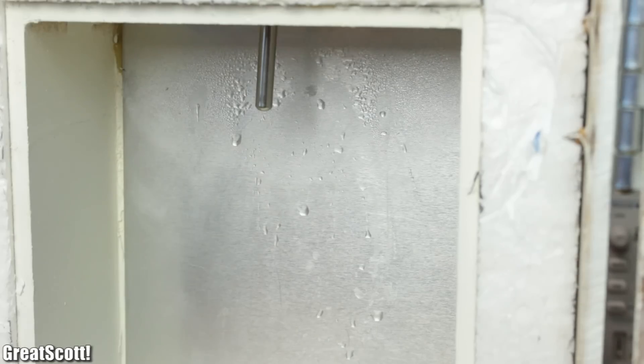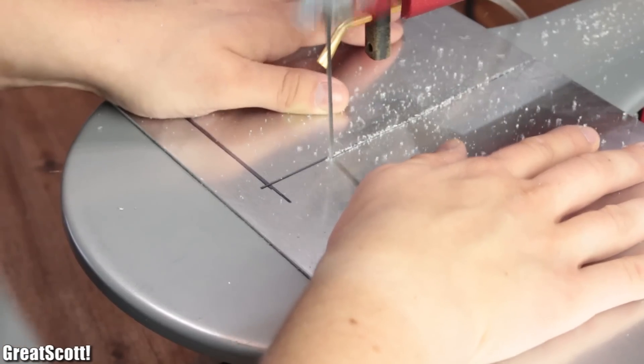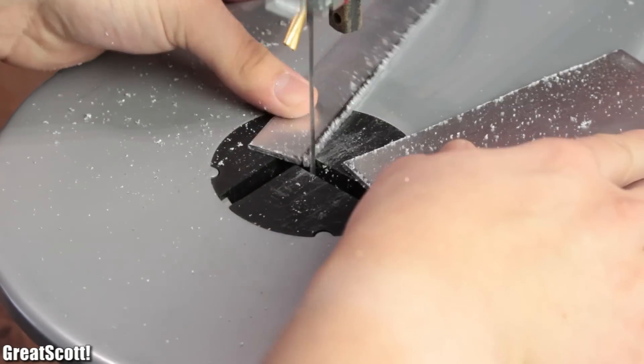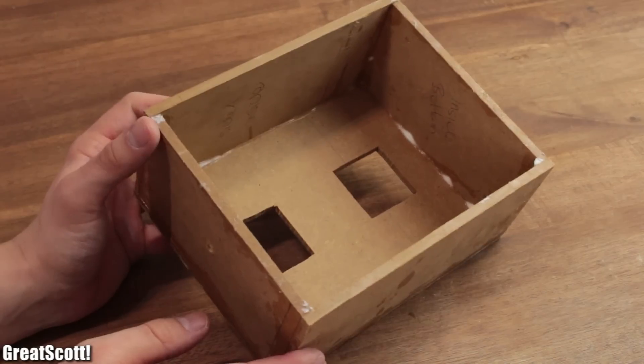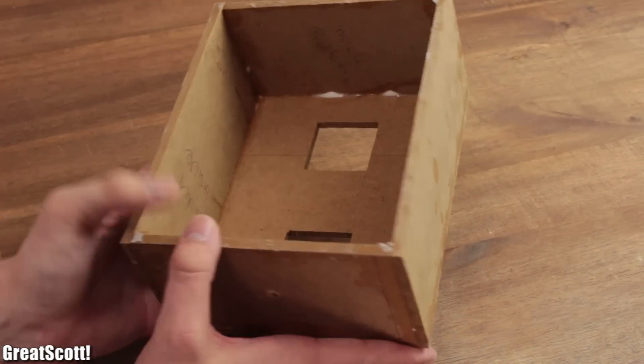While the glue was drying, I measured out a fitting square piece of 2mm thick aluminum which will later act as a heatsink for the cold side. Of course, I used my decoupage saw afterwards to create it. A couple hours later, the glue of the inner compartment was finally dry.